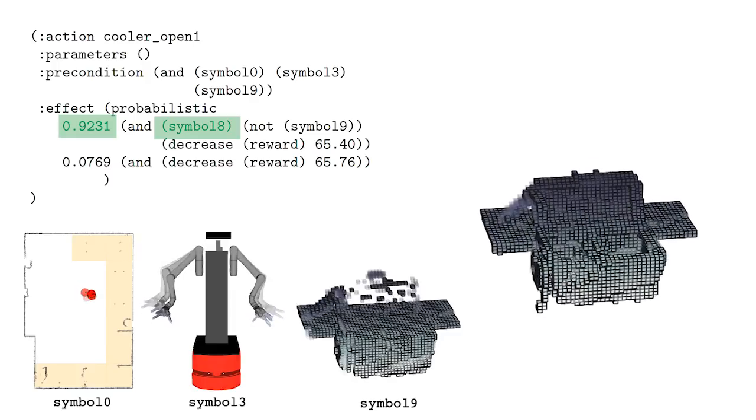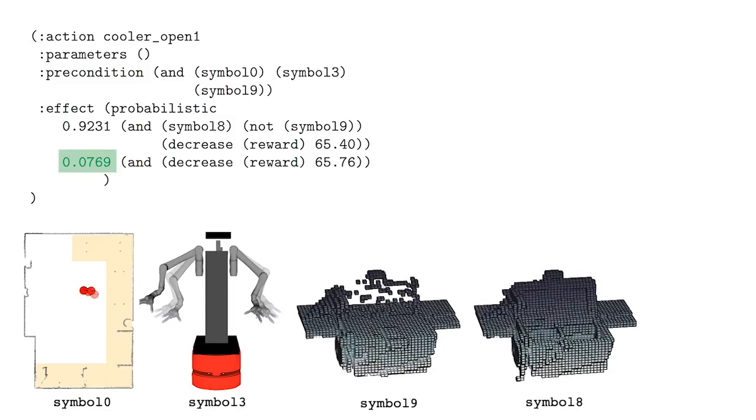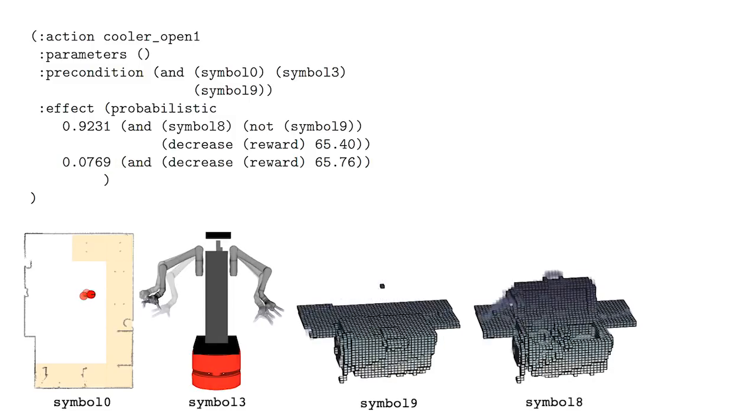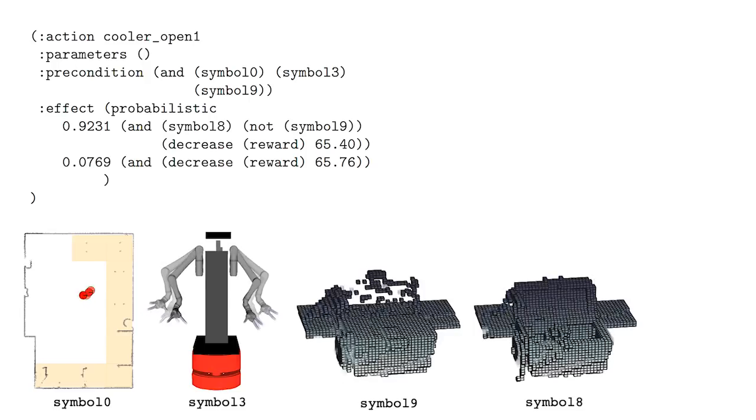or, with a probability of about 8%, nothing changes. The latter case occurs because Anna has to push the cooler lid open, and sometimes it bounces back closed.